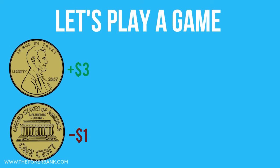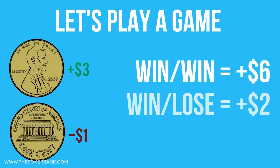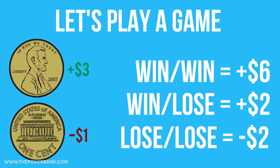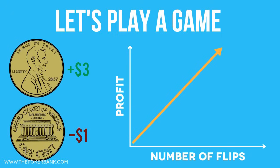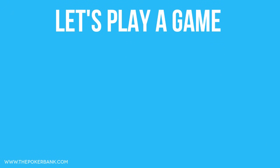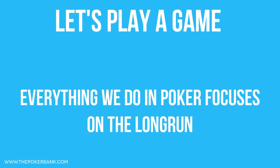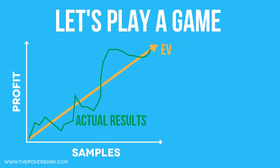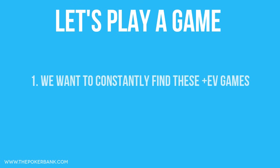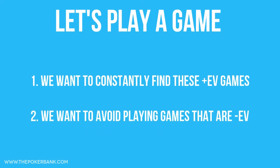If we only flip the coin two times, your only outcomes are plus $6, plus $2, or negative $2. You can see how in the short term results can seem quite different from the plus $1 expected value we calculated. But if we flip the coin millions of times, you will average $1 profit per flip. In poker we focus on the long run — results can vary wildly in small samples, but in the long run the math brings everything back to expected value. We want to constantly find plus EV opportunities and avoid negative EV ones.